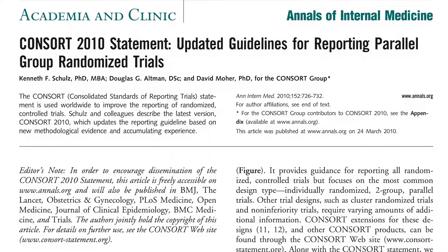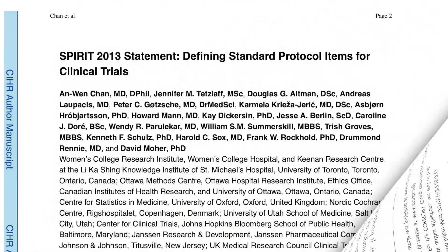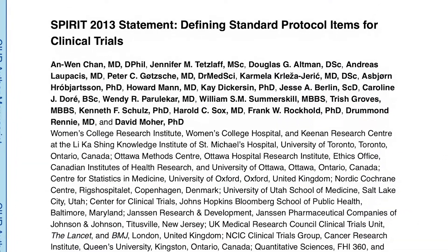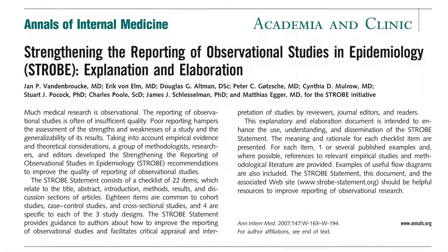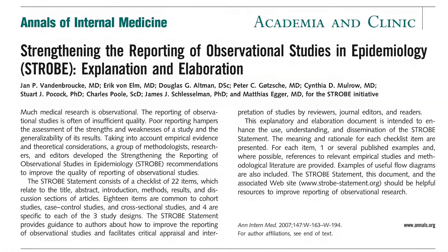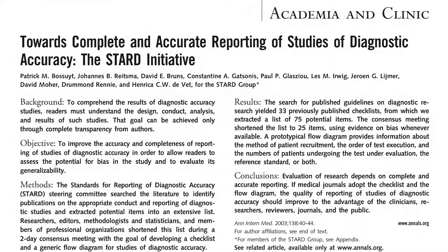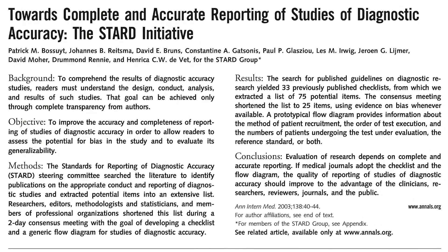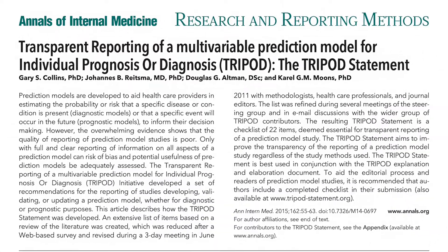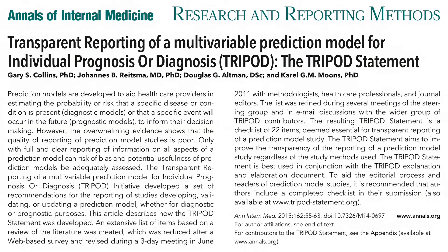Randomized controlled trials can be evaluated using the Consolidated Standards of Reporting Trials (CONSORT) and the Standard Protocol Items Recommendations for Interventional Trials (SPIRIT). For observational studies, the Strengthening the Reporting of Observational Studies in Epidemiology (STROBE) guidelines can be used. For diagnostic and prognostic studies, the Standards for Reporting of Diagnostic Accuracy (STARD) and the Transparent Reporting of a Multivariable Prediction Model for Individual Prognosis or Diagnosis (TRIPOD) frameworks can be used.